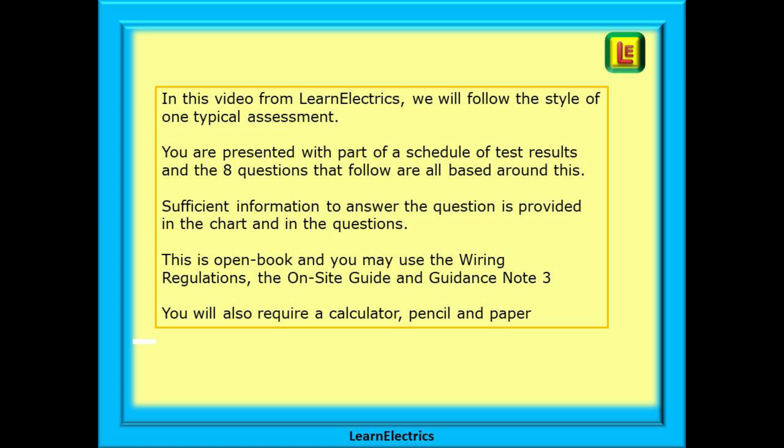Sufficient information to answer the question is provided in the chart and in the questions. This is open book and you may use the wiring regulations, the on-site guide and guidance note 3. You will also require a calculator, pencil and paper.